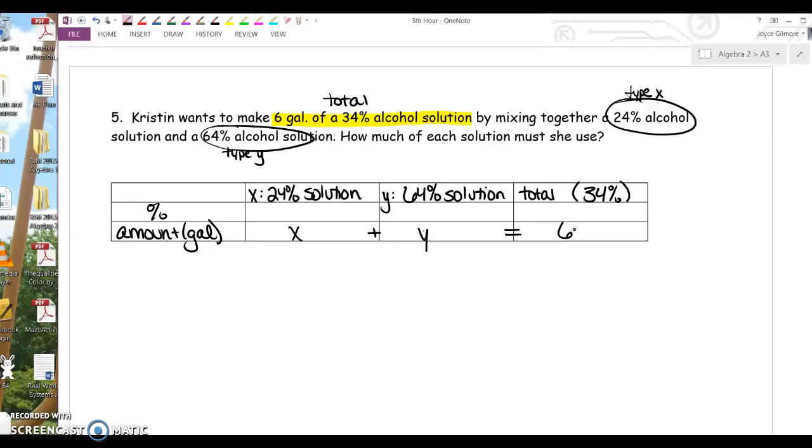How much of the X solution is actually alcohol? We would do 0.24 times X. That will tell us however much of that X solution that we use, that will tell us how much of it is pure alcohol.